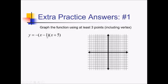To graph this parabola in intercept form, we're going to first find the zeros. So basically set this equal to zero and figure out what zeros are at each of these factors. So we're going to have zeros of 1 for that first factor and negative 5 for the other factor. And we can graph those right now — we have the x-intercepts negative 5 and positive 1.